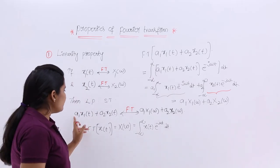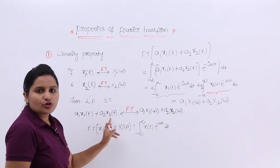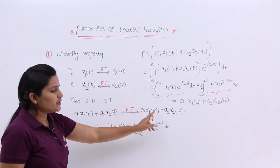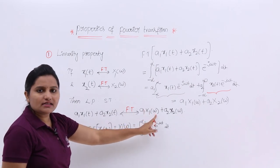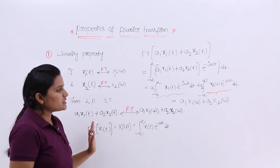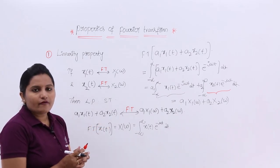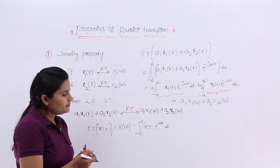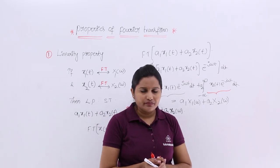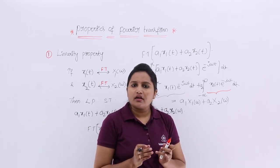So this is proved. Whenever you consider the total signal transform, you are going to get the sum of individual transforms. This is the linearity property, and now I want to consider an example to illustrate it.